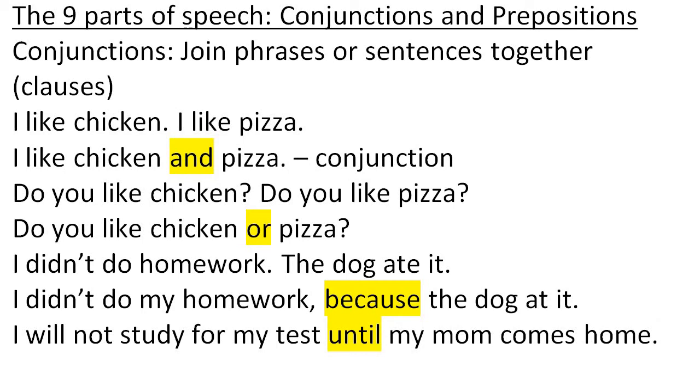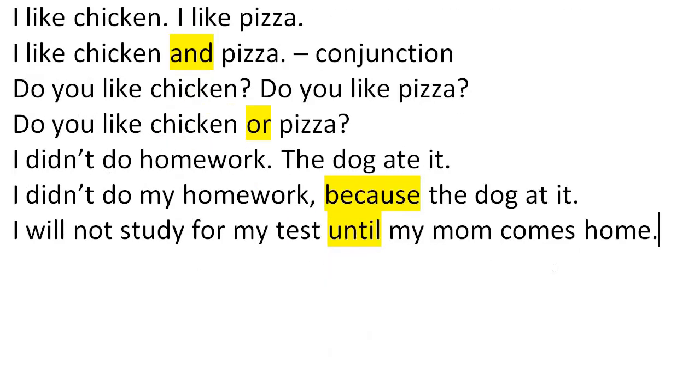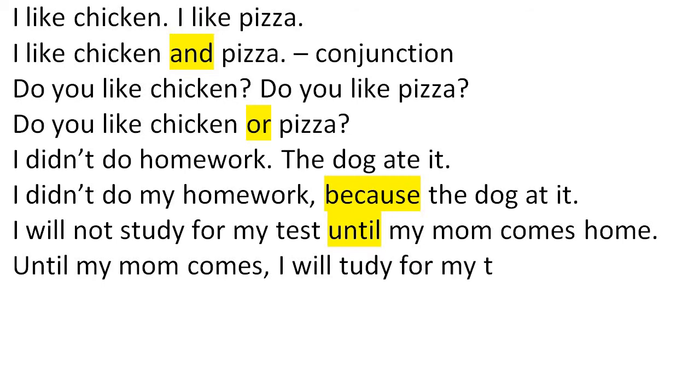Now be careful. Up until now, and, or, because, until, they've all been in the middle, in between the two sentences or the two phrases that I have combined. That will not always be true for conjunctions. So you can have a conjunction at the beginning. Watch this. Until my mom comes home, I will study for my test. And there's the conjunction still, because I'm still joining this with this. And it comes at the beginning.